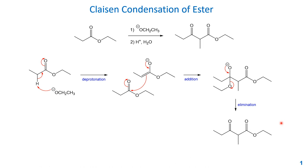In three steps, this is the general mechanism for Claisen condensation: the first step is always deprotonation using the base as catalyst, the second step is nucleophilic addition, and the third step is elimination.